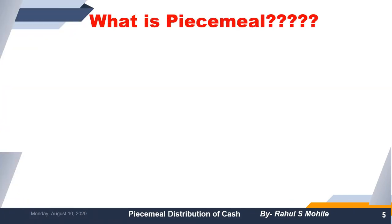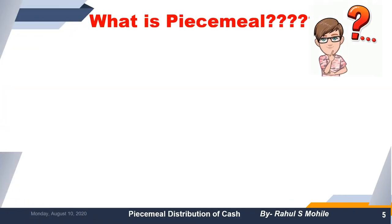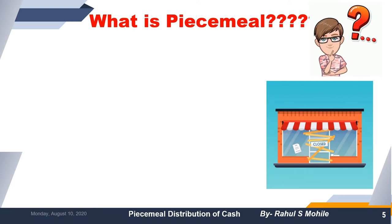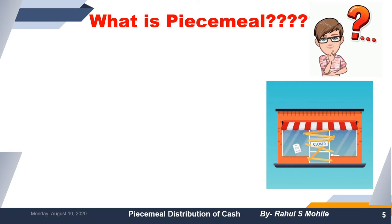Let us understand the meaning of Piecemeal. Piecemeal means paying in pieces or installments. When a business is closed, whatever payments need to be made cannot be done in one lump sum, because all assets need to be realized first. Whatever cash we get from that realization will be used for settlement of the liabilities.